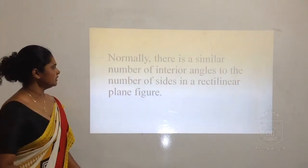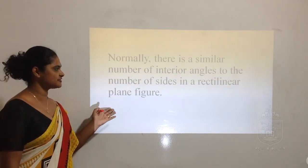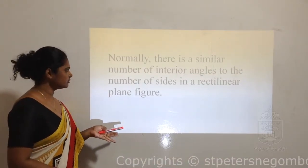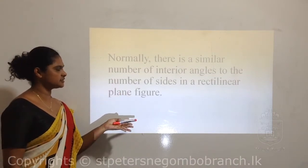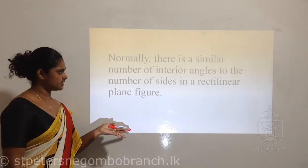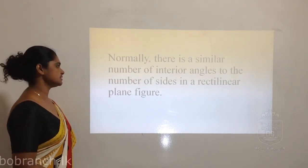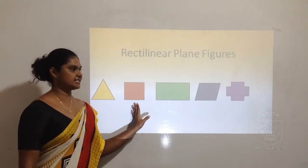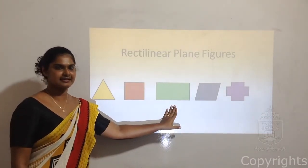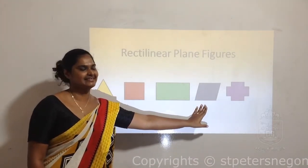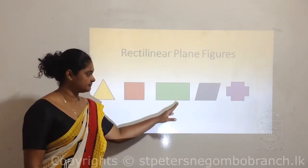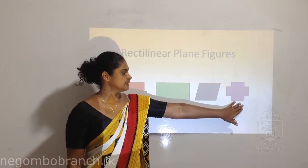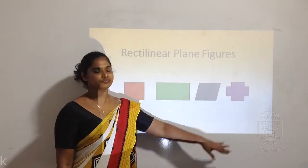Normally there is a similar number of interior angles as the number of sides in a rectilinear plane figure. The number of angles is similar to the number of sides. Here the triangle had three angles and three sides. Square also had four angles and four sides. Rectangle also had four angles and four sides. The rhombus also had four angles and four sides. But the cross had a lot of angles.